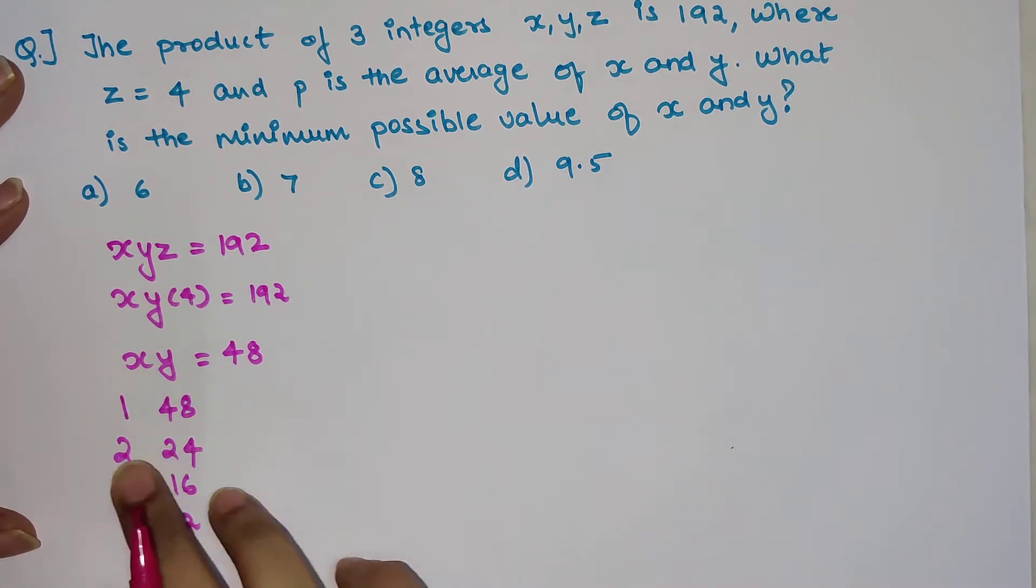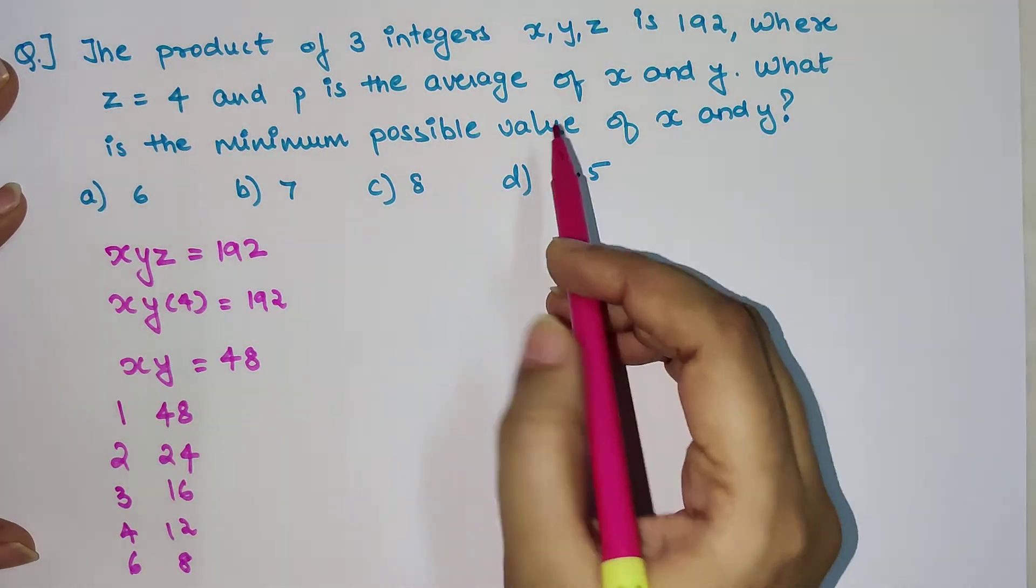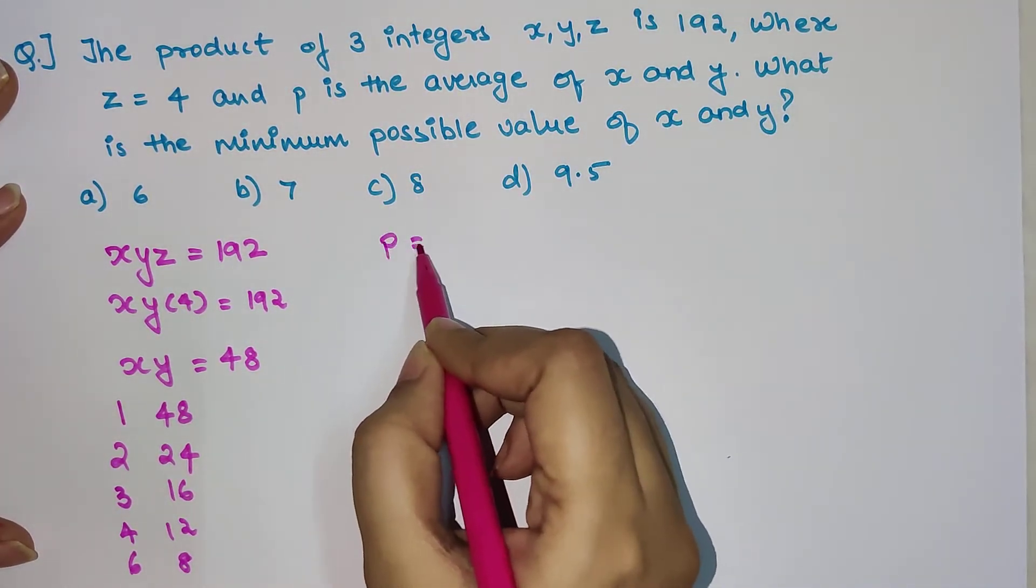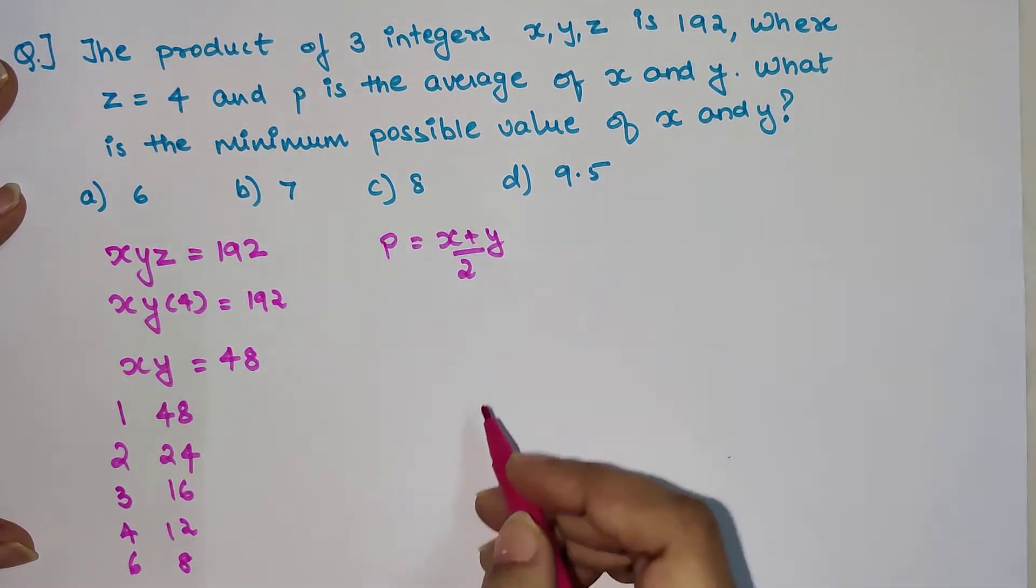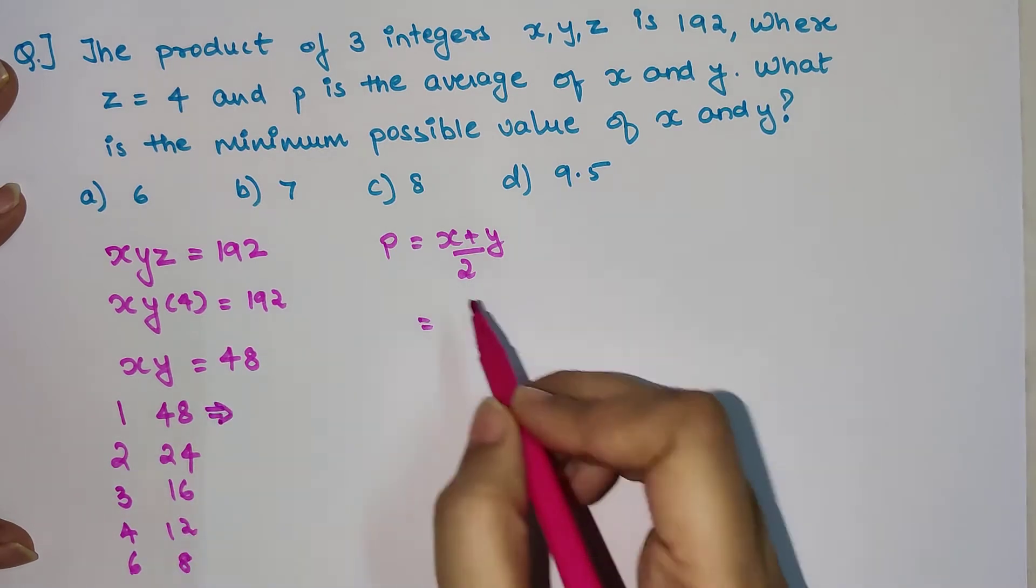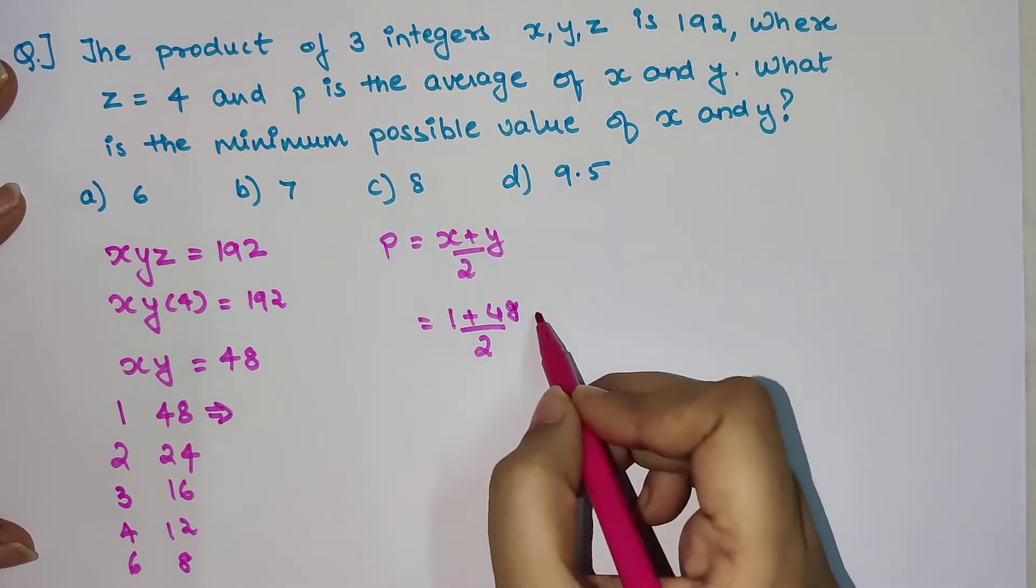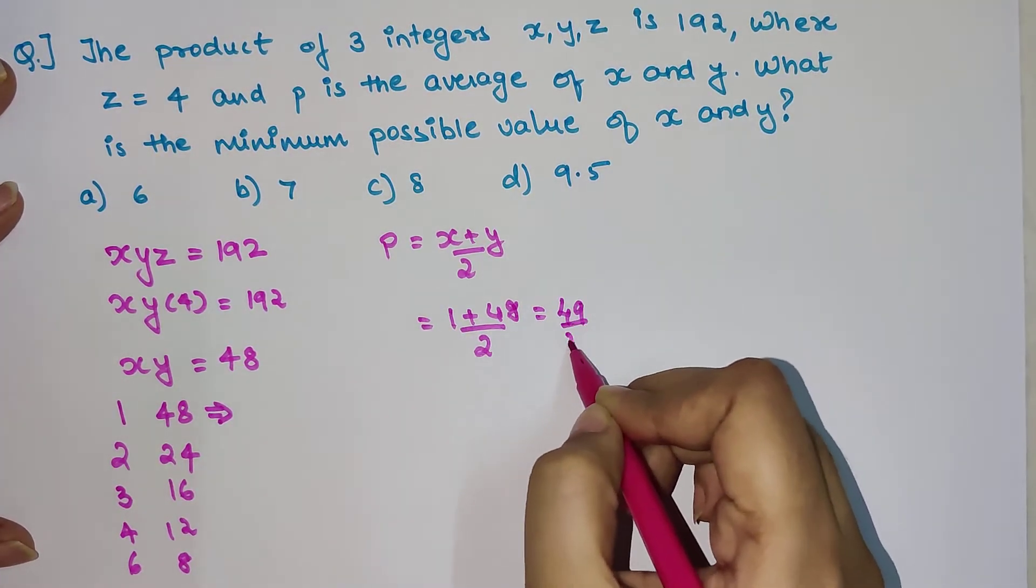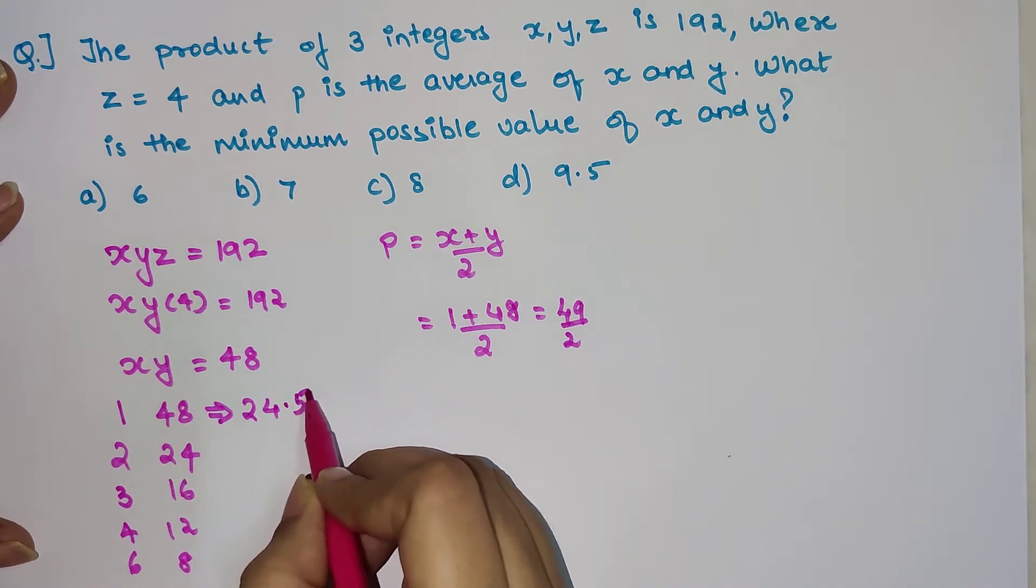Now we know that P is the average of X and Y. So basically P is nothing but X plus Y upon 2. If we do the first value: 1 plus 48 upon 2, that gets you 49 upon 2, and that is nothing but 24.5.